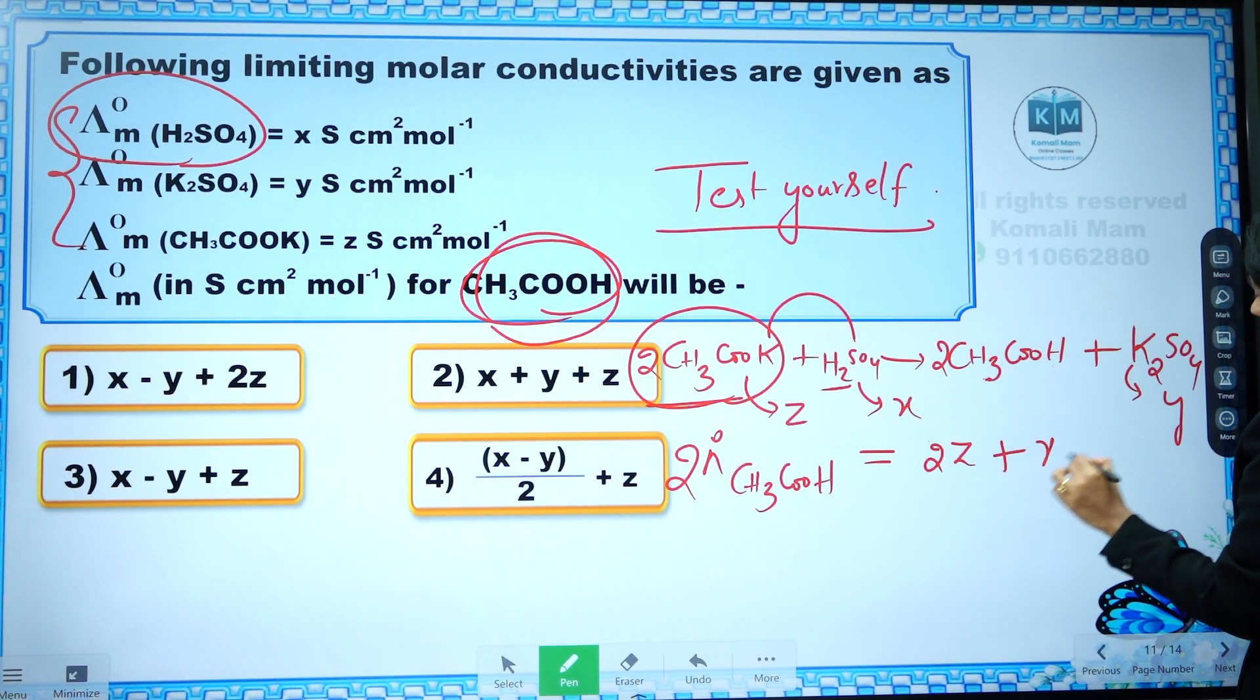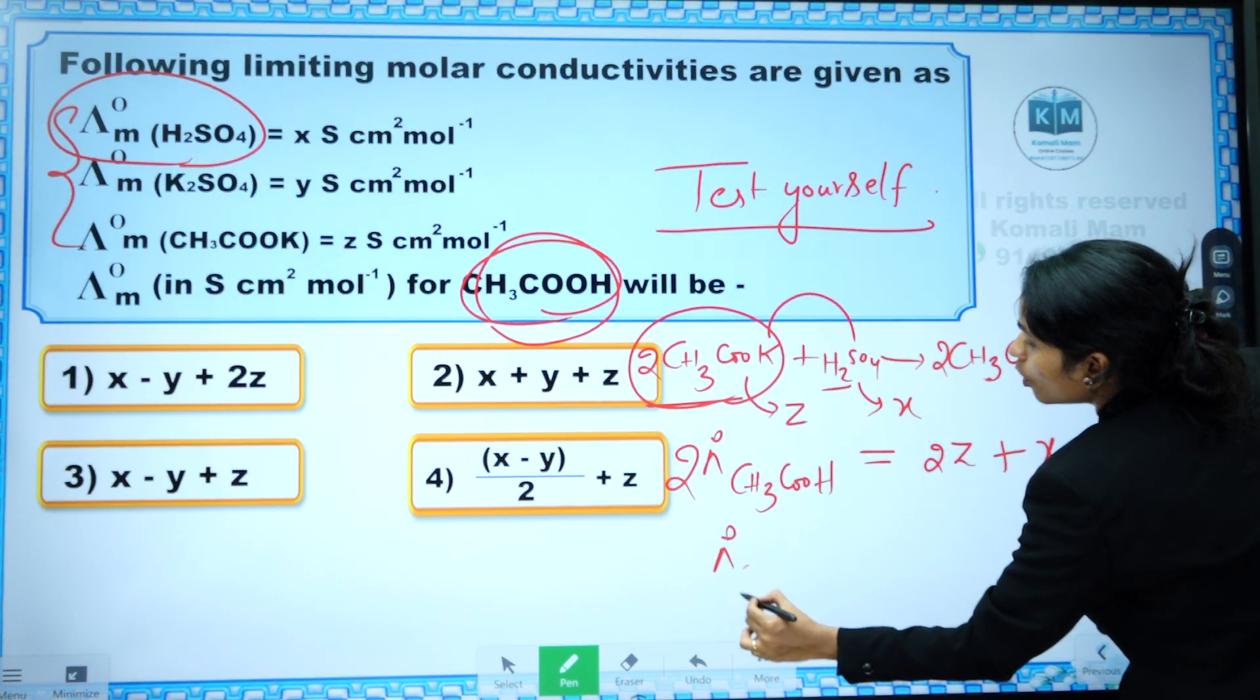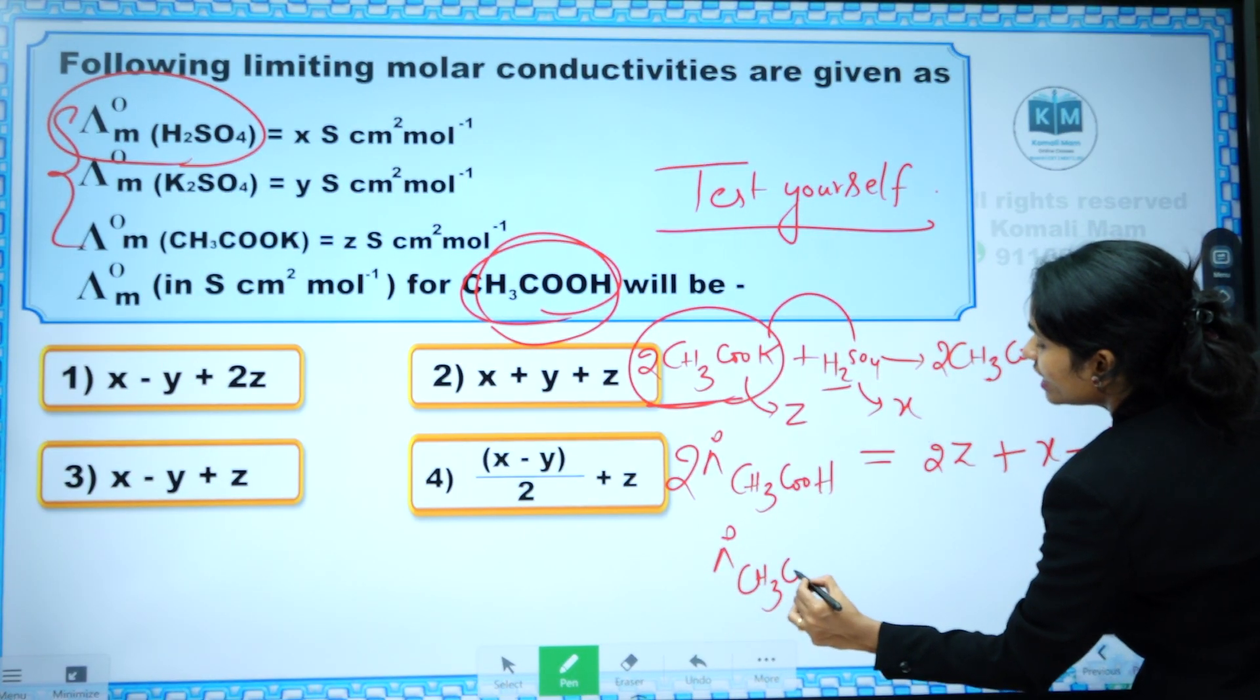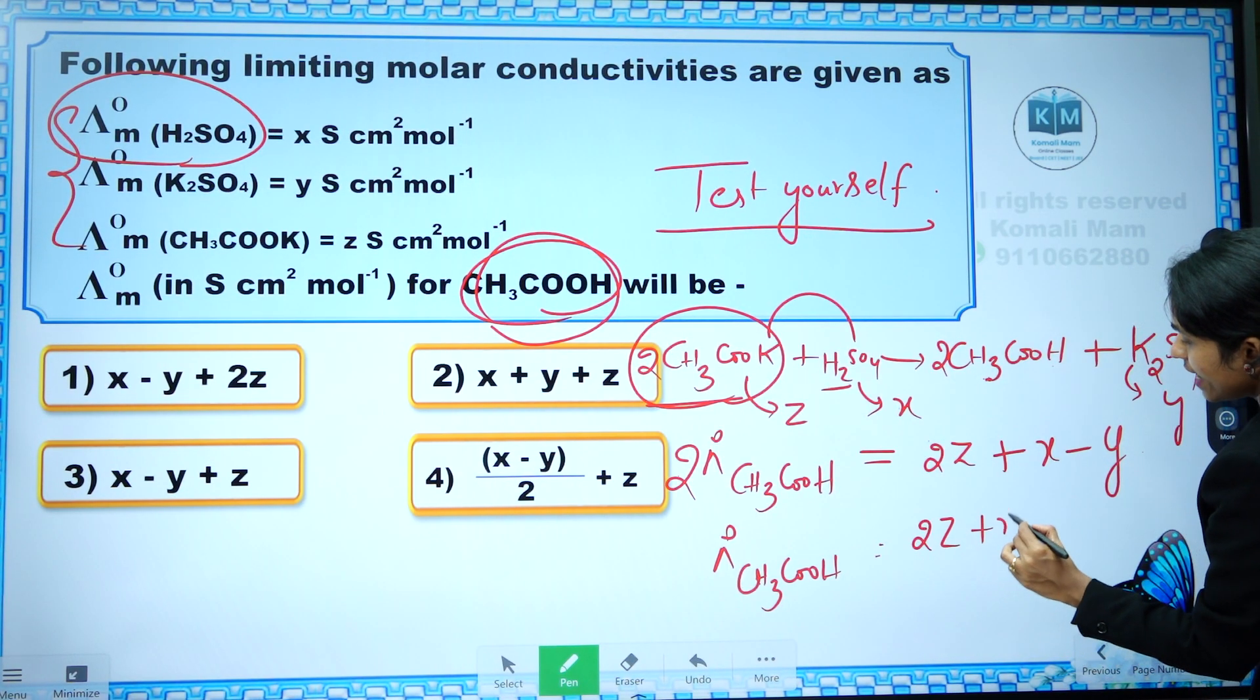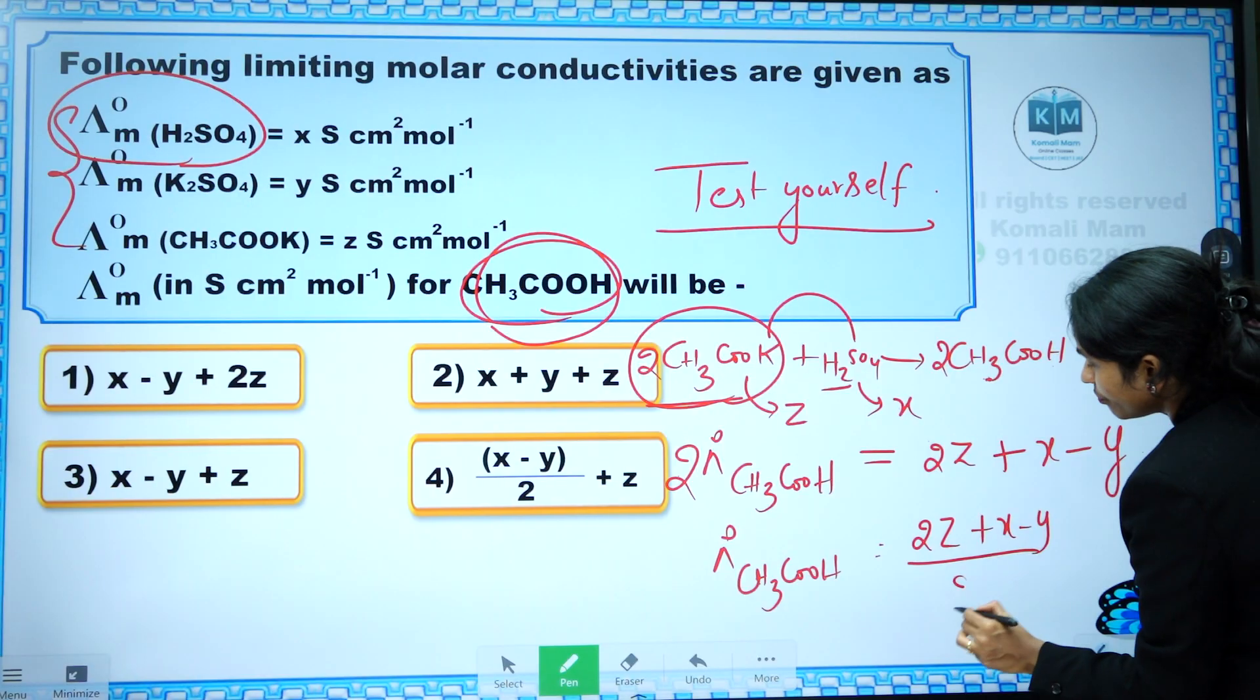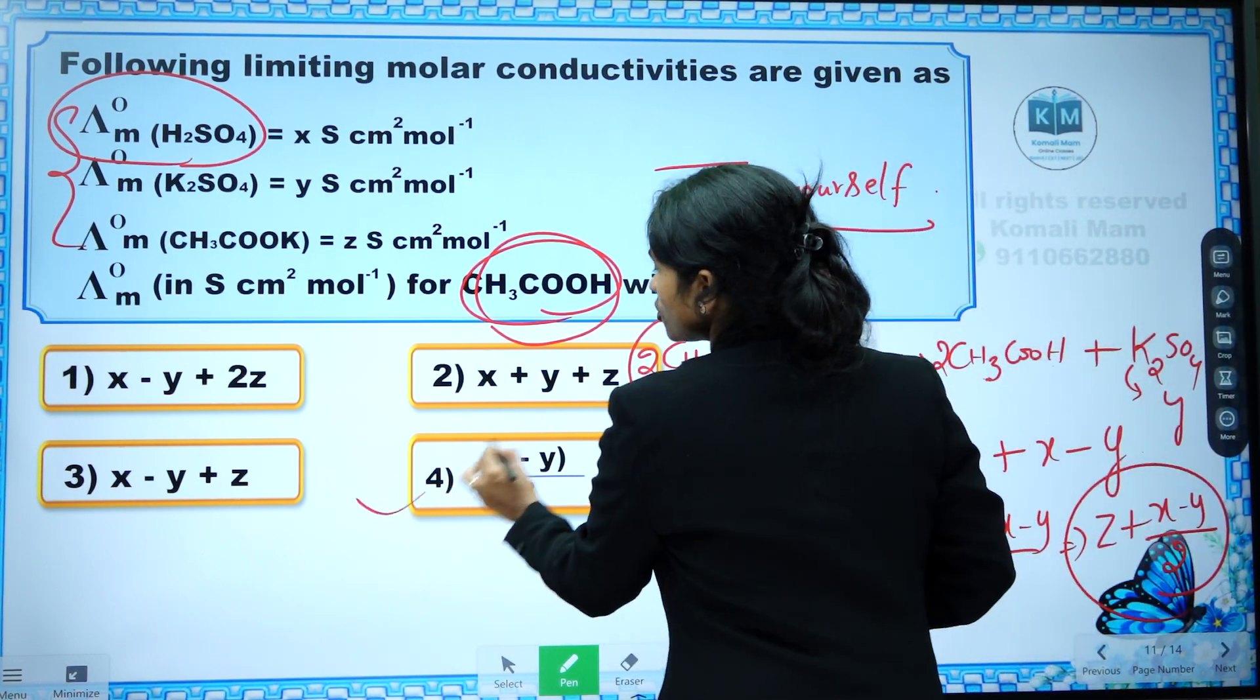Then it will be two ions into each one conductivity z plus this is x. If it goes that side it is y, then this two if it comes this side, molar conductivity at infinite dilution is equal to if it divides two z plus x minus y by two. Then this two two will be cancelled: z plus x minus y by two. Z plus x minus y by two. Option four is the correct answer.